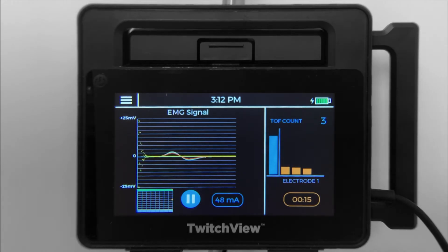Once the fourth twitch disappears, the monitor will measure the TRAIN-4 count. The first time the monitor measures a TRAIN-4 count of zero, it will ask if you'd like to proceed with post-tetanic count.